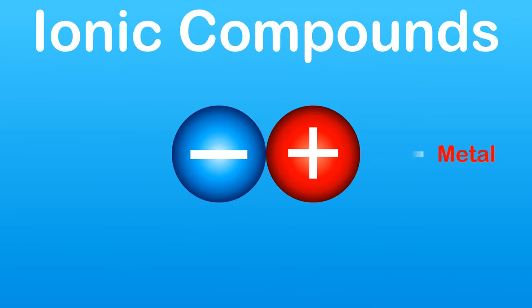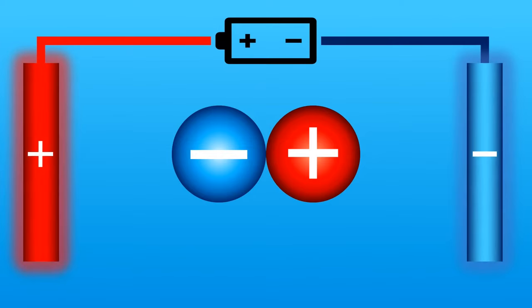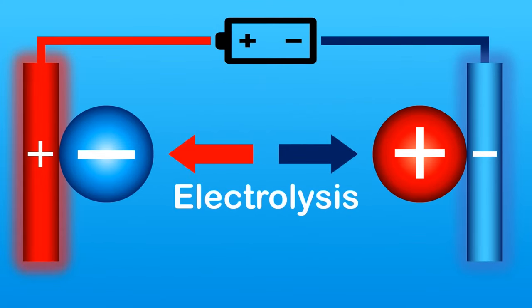Ionic compounds are made of a positive metal ion and a negative non-metal ion, and electrolysis allows us to split the metal from the non-metal using electricity.